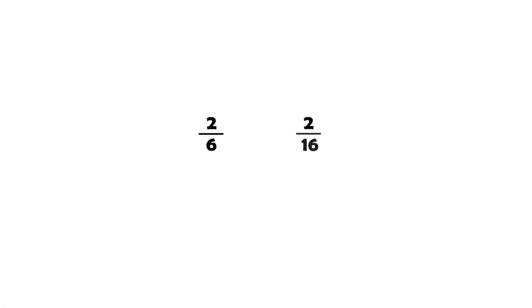But if we have two fractions — two-sixths and two-sixteenths — are they equivalent, or is one of them larger than the other? If you look carefully at the two fractions, you will find that they have the same numerator, but the denominators are different. What does that mean?